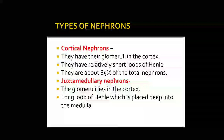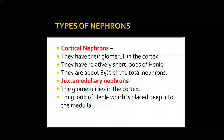Now, how many types of nephrons are there? There are two types: cortical nephrons and juxtamedullary nephrons. Cortical nephrons have their glomeruli in the cortex and have relatively short loops of Henle that extend only a little into the medulla. They make up about 80 to 85 percent of the total nephrons.